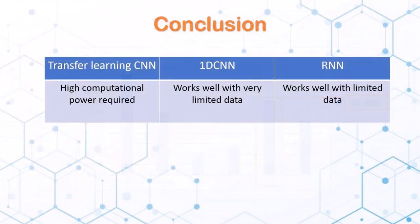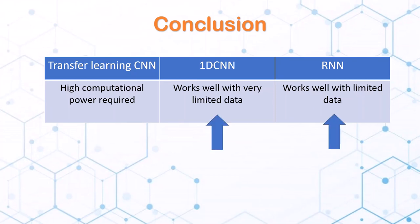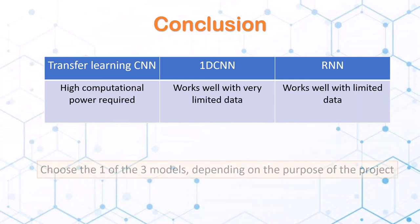To conclude, transfer learning CNN, 1D CNN, and RNN are the best models. However, they all have different circumstances when they should be used. Transfer learning CNN requires high computational power, while 1D CNN and RNN work well for limited training datasets. Hence, potential developers can choose from one of these models depending on the purpose of their project. Thank you.